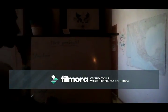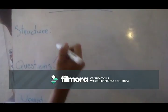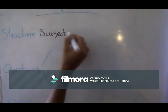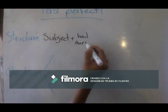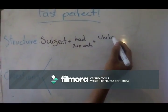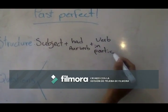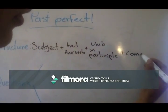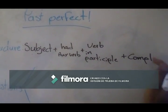So we will see how to structure past perfect. We have the subject, plus 'had', which is our auxiliary verb, plus the verb in participle, and plus the complement — everything you want to say in the sentence.